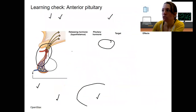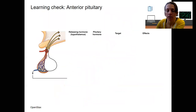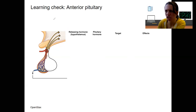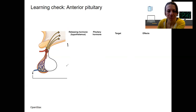Let's do a learning check. Fill out this table with the releasing hormones from the hypothalamus — just the main three: CRH, TRH, and GnRH.